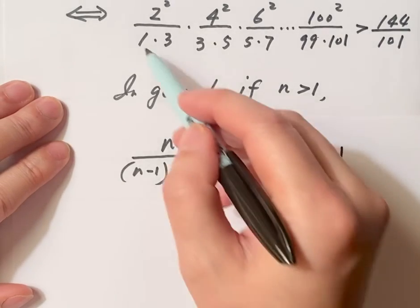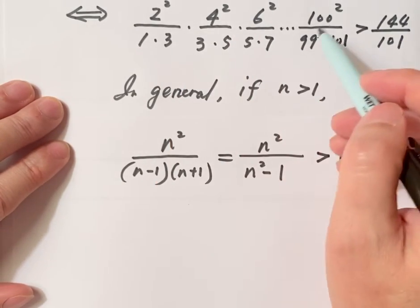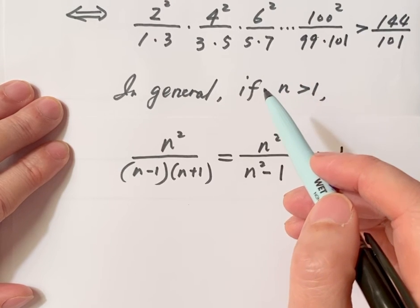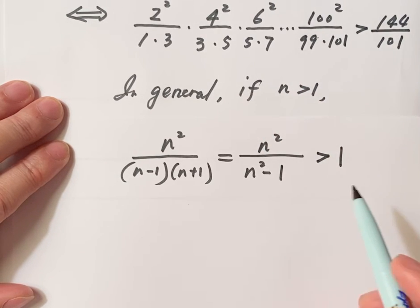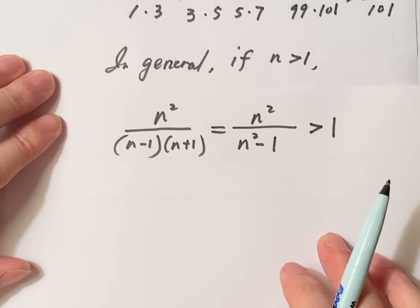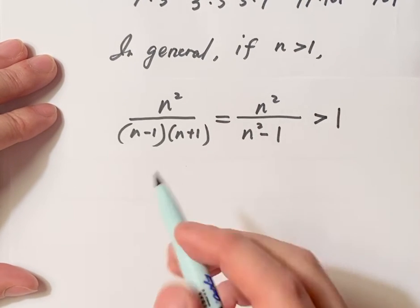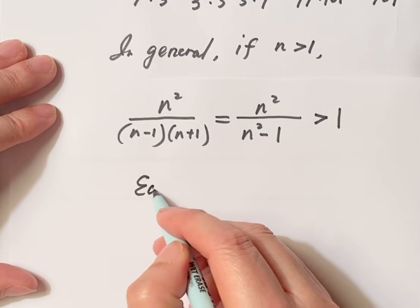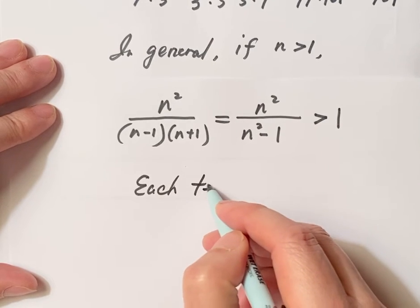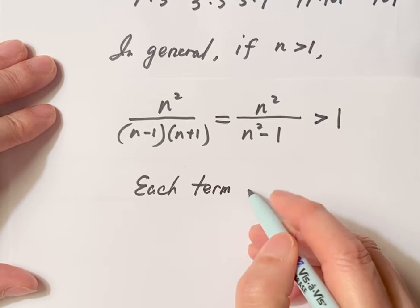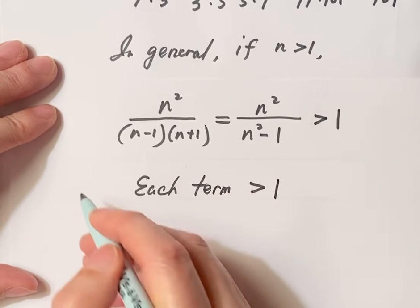What does this mean? This means each term on the left-hand side is bigger than 1.